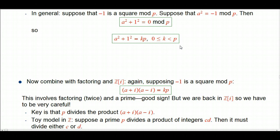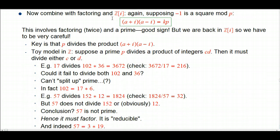Now we're at the end of the digression. You might have wondered where the complex numbers and Gaussian integers went — here's where we bring them back. We're going to combine that with factoring in the Gaussian integers. If minus 1 is a square mod p, the equation a² + 1² ≡ 0 mod p can be written as (a + i)(a − i) = kp. This is really crucial — it involves factoring the same number in two different ways, one of which involves something that's a prime in the integers. We've already seen that something like 2 or 5 can factor in the Gaussian integers, so we have to be careful.